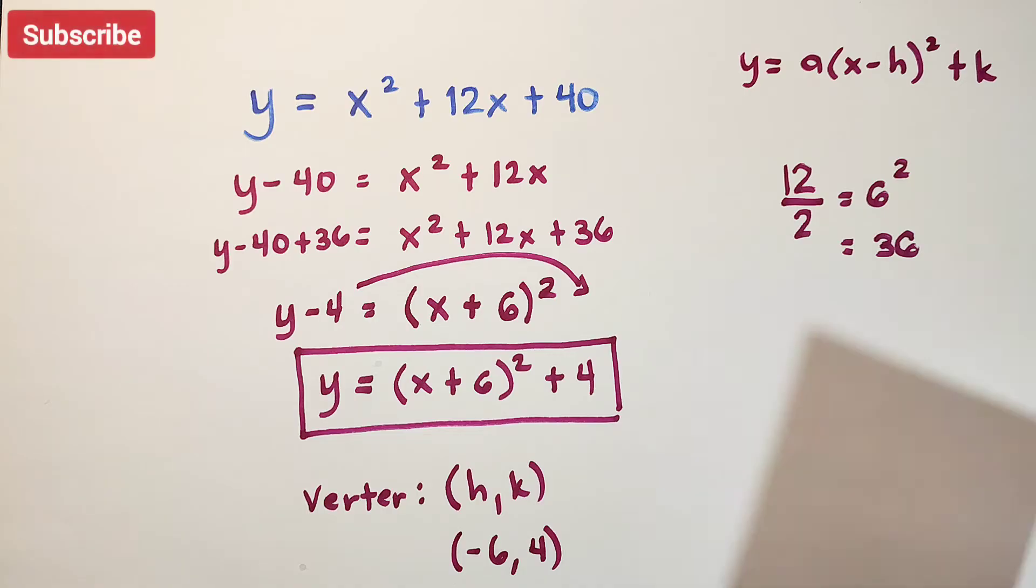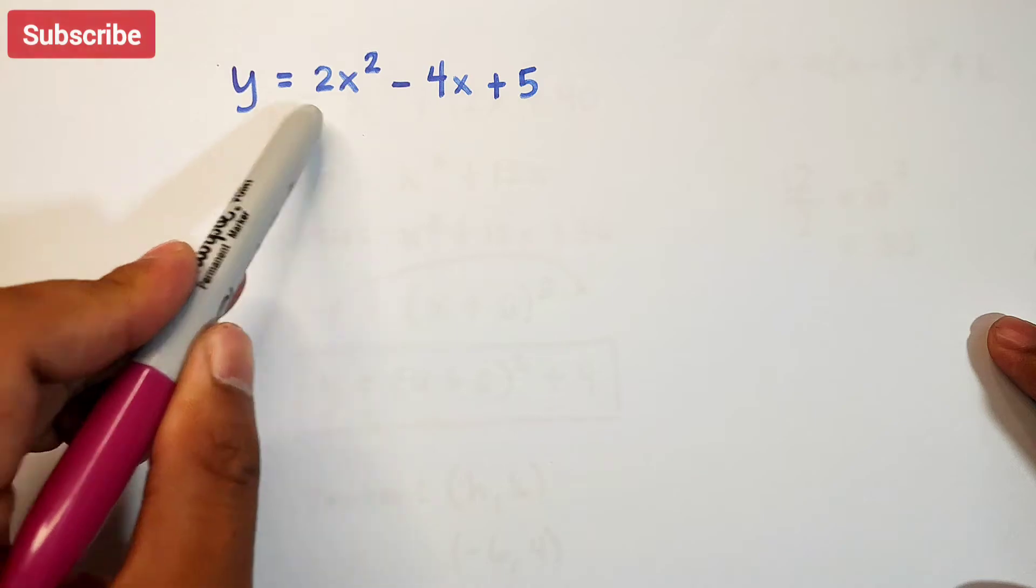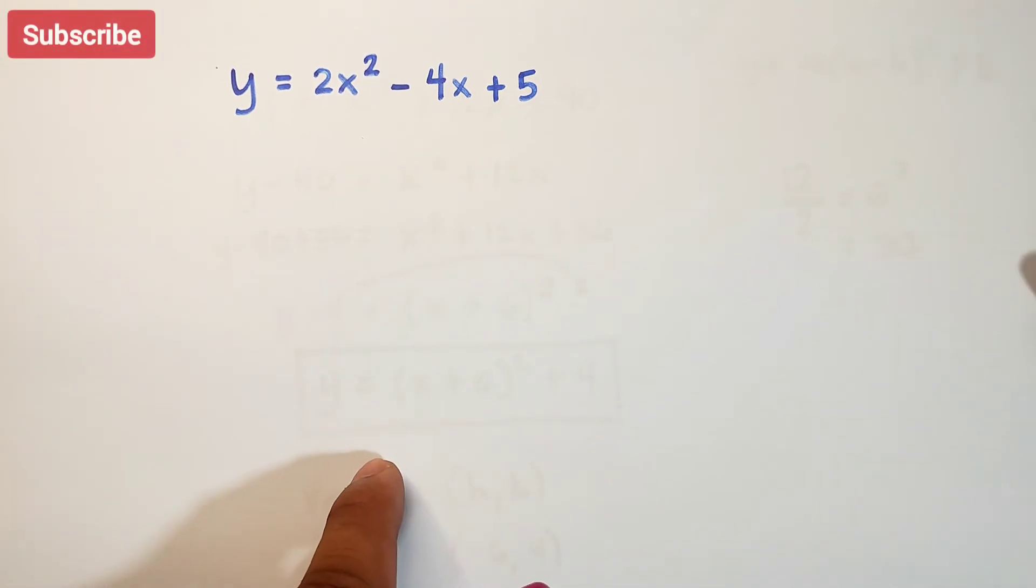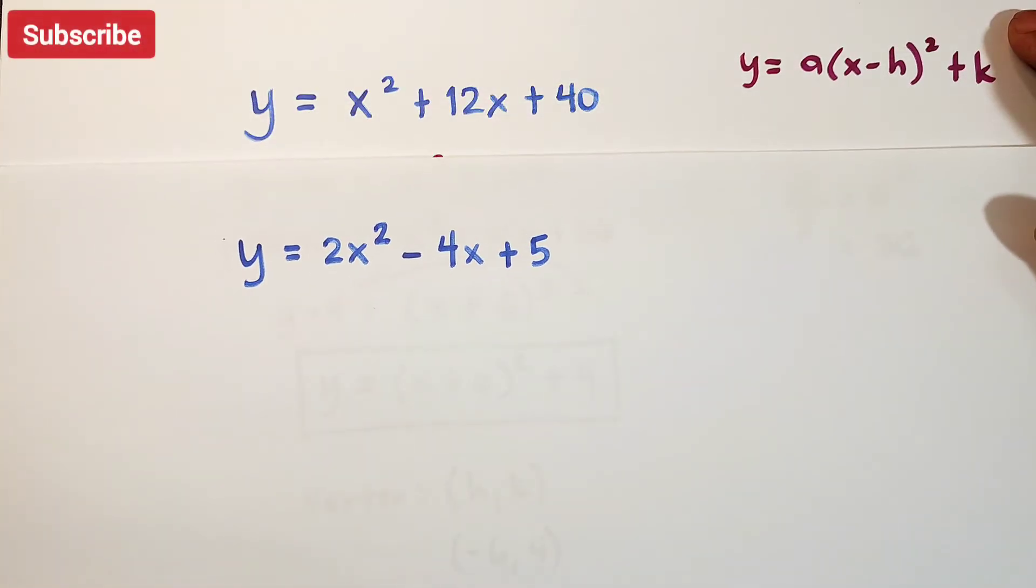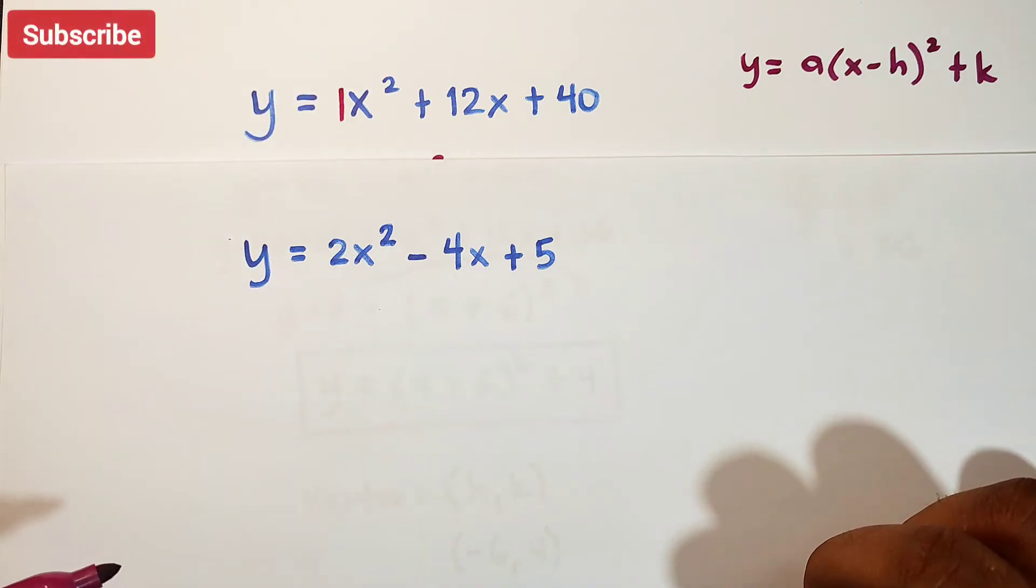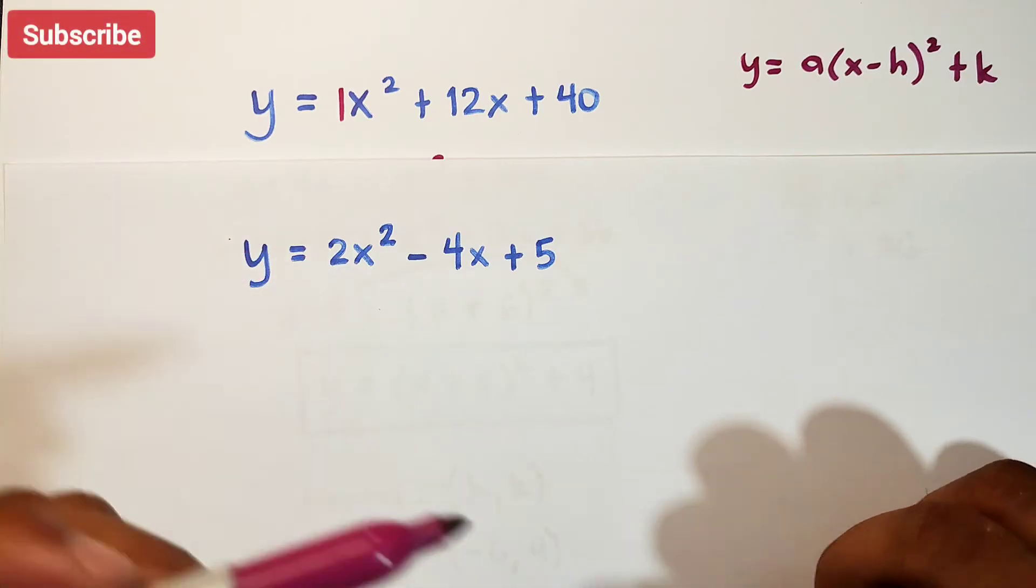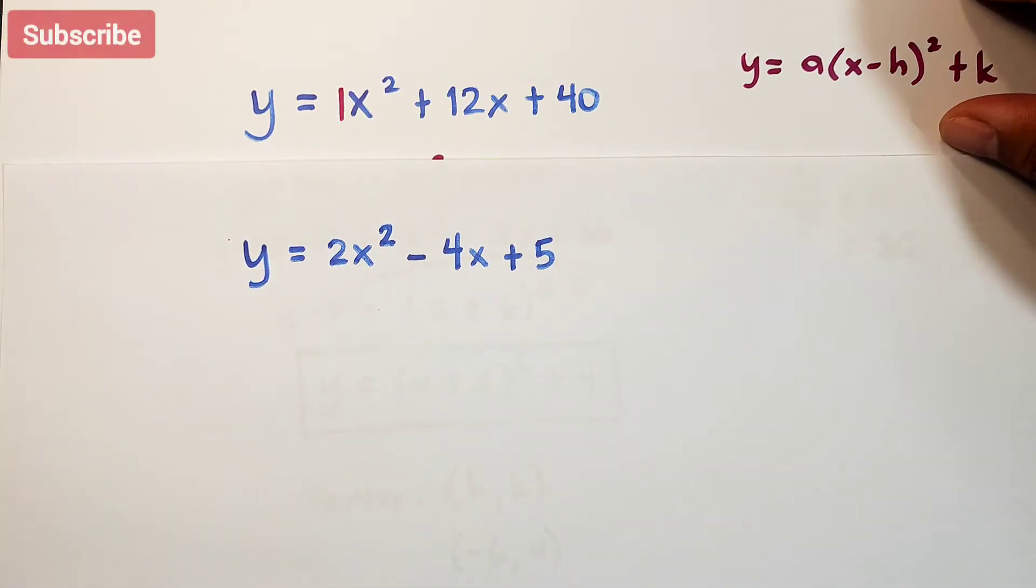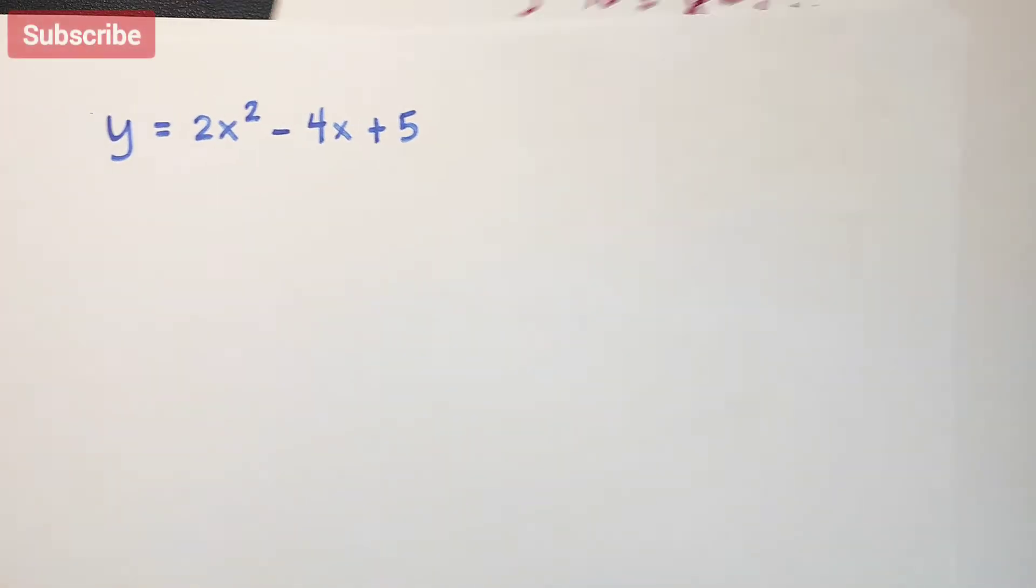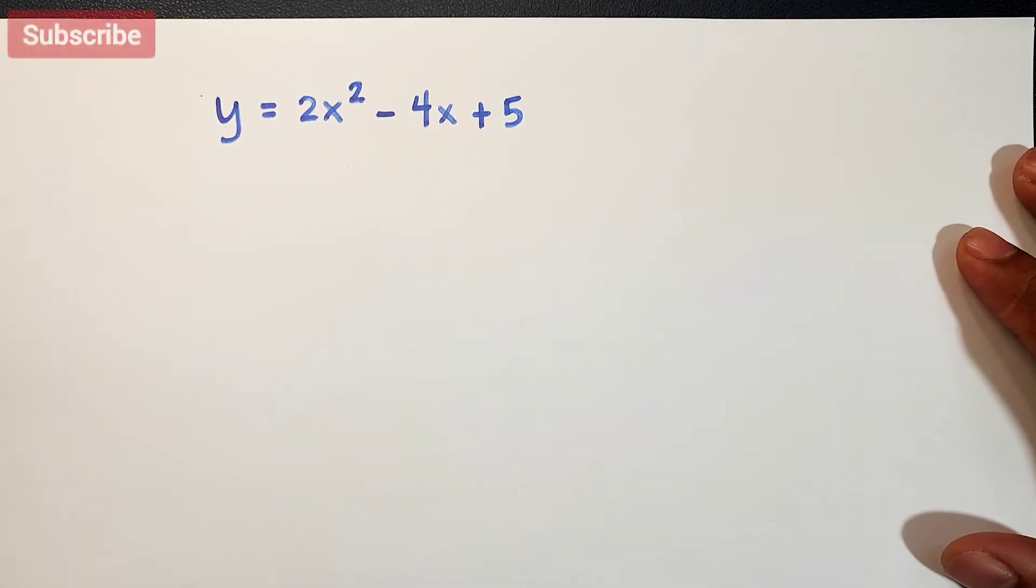Now let's move on with the next example. For our next example, we have y equals 2x squared minus 4x plus 5. The difference from the previous example is that here the value of a is equal to 1, but here the coefficient of the x squared is 2. There's a slight difference with an additional process.